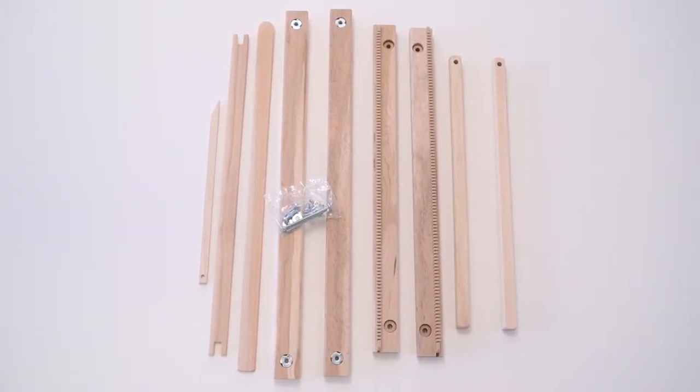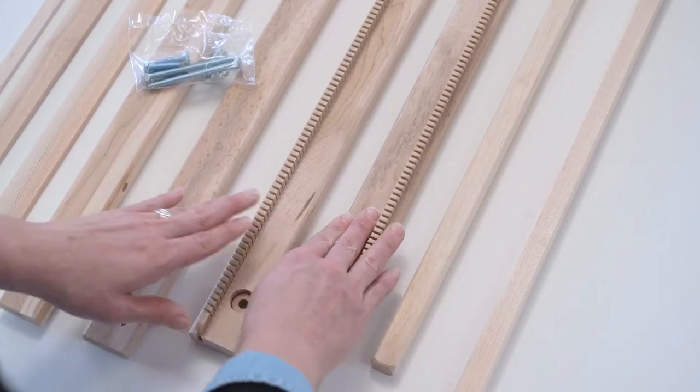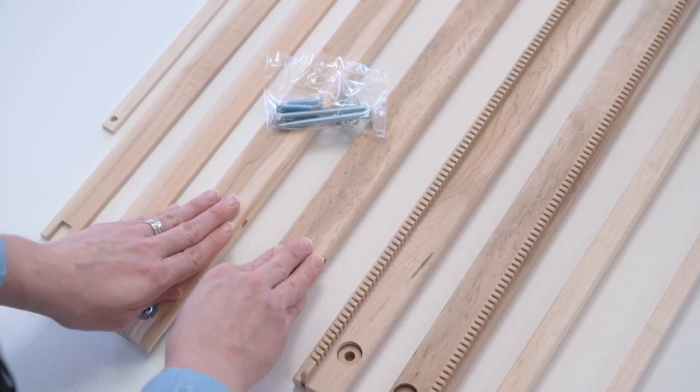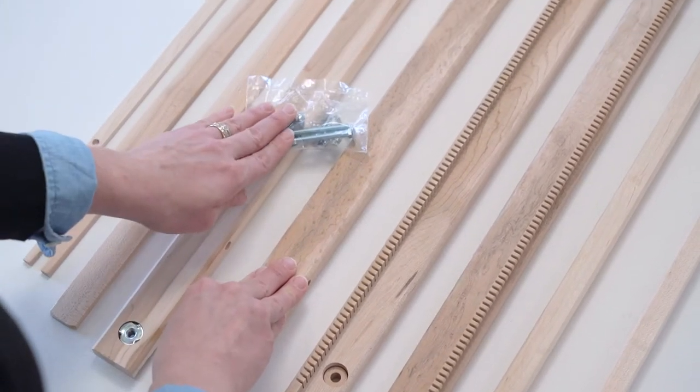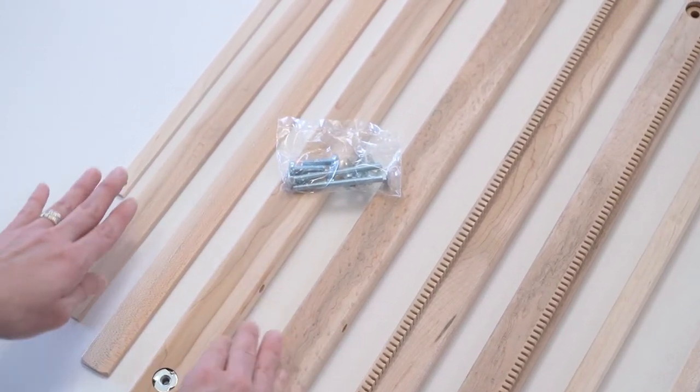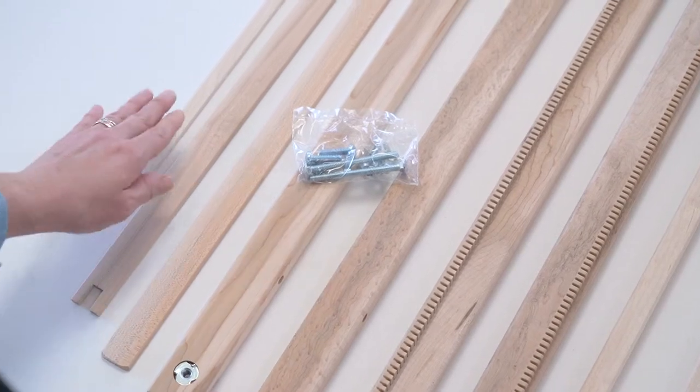The Deluxe Weaving Frame comes with two kickstand legs, a top beam, a bottom beam, two notched side beams, a hardware pack with wing nuts and bolts, and weaving tools including a pickup stick, stick shuttle, and weaving needle.